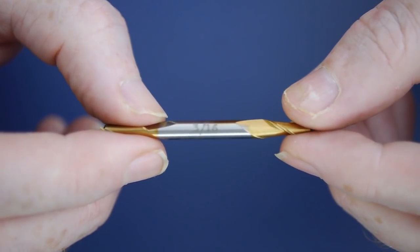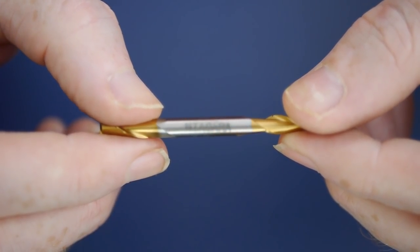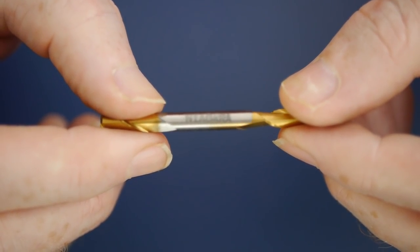This is a 3/16th end mill from Niagara. It has a part number on, so I should be able to look up the cutting speed data and make sure I use it correctly.